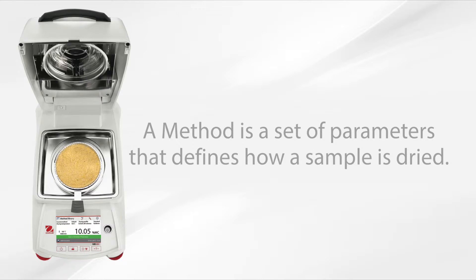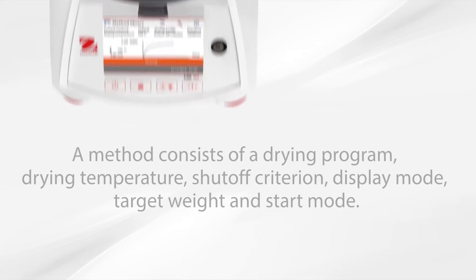A method is a set of parameters that defines how a sample is dried. A method consists of a drying program, drying temperature, shutoff criterion, display mode, target weight, and start mode.